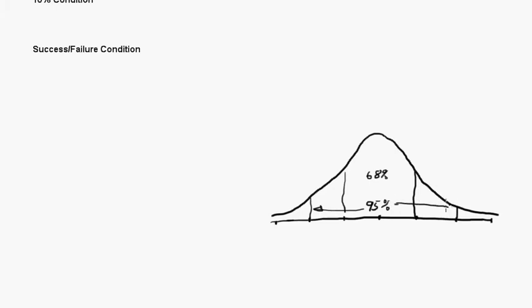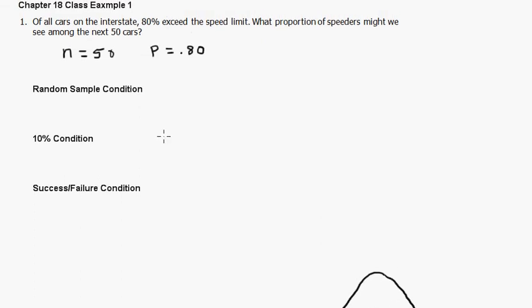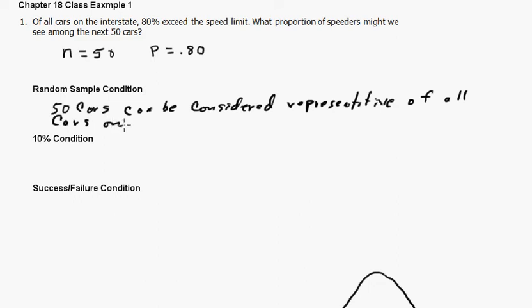To be able to build this model and answer the question, we need to check some conditions. Here, they're not all that difficult. The first two are the independent assumption, the conditions to assume that, to show that they're independent. So the speed of each car is independent. The random sample, we're just going to say that 50 cars can be considered representative